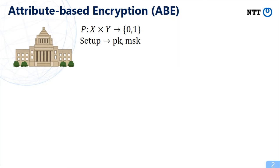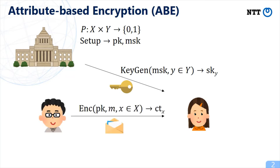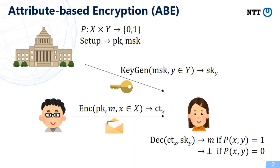Attribute-based encryption consists of four algorithms. The setup algorithm outputs a public key and master secret key. The key-generation algorithm takes a master secret key and key attribute y and outputs a secret key for attribute y. The encryption algorithm takes a public key, message, and ciphertext attribute x and outputs a ciphertext for x. Decryption is possible for a ciphertext if the attributes x and y satisfy the predicate P.